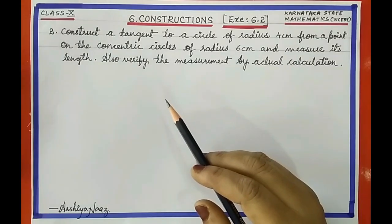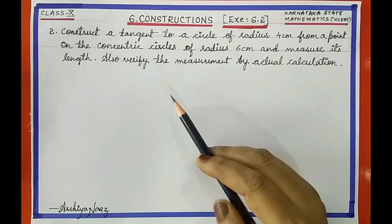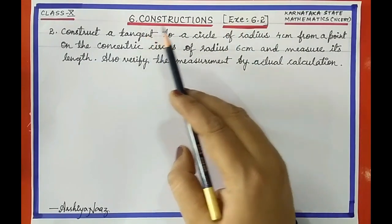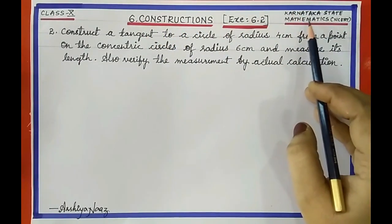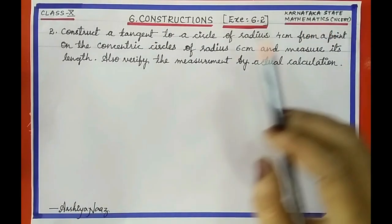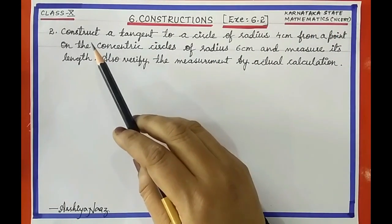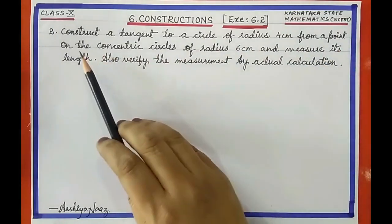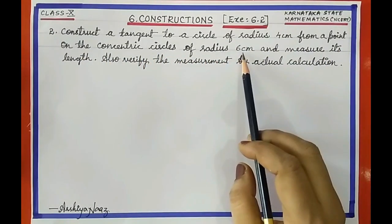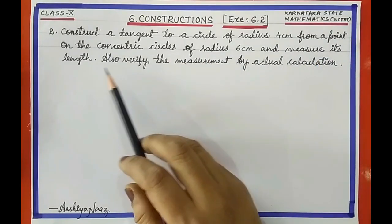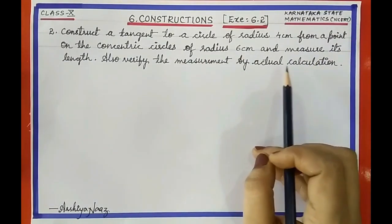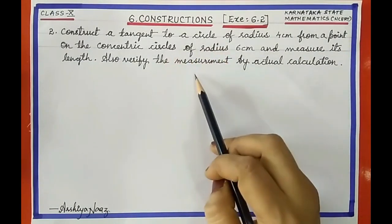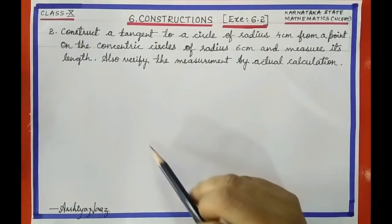Hello dear students, welcome to Arshayana's channel. In today's class let us continue exercise 6.2 from the sixth chapter, Constructions, Karnataka state mathematics textbook based on NCERT. The question is: construct a tangent to a circle of radius 4 centimeter from a point on the concentric circle of radius 6 centimeter, measure its length, and verify the measurement by actual calculation. According to the question, let us start the construction step by step.